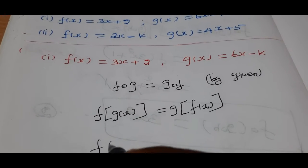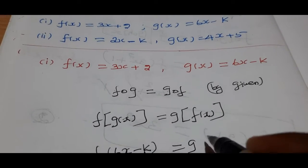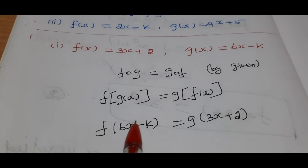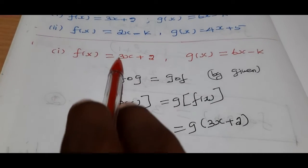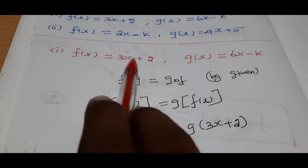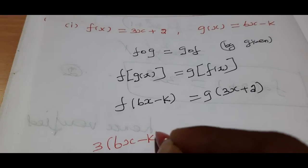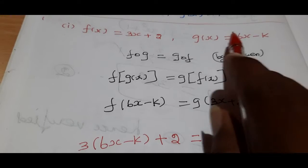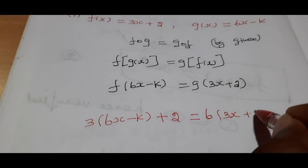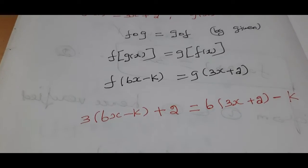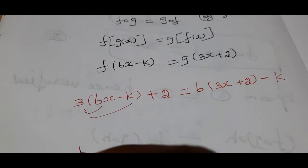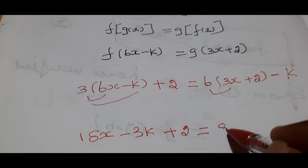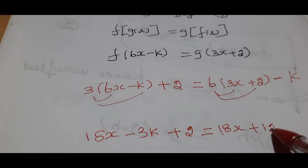How do we change this? f of x, g of x. After substitution, we get minus 3k plus 2 is equal to 12 minus k.